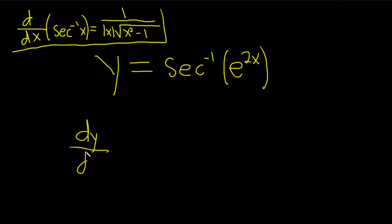So dy/dx, first we take the derivative of the inverse secant. It's 1 over, but now instead of x, it's e to the 2x. So it's absolute value e to the 2x, square root, and then it's x squared, but it's not x, it's e to the 2x squared. It's that whole piece squared, and then minus 1, times the derivative of the inside.